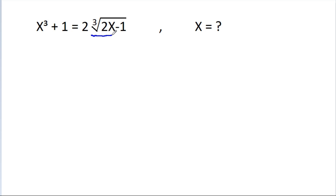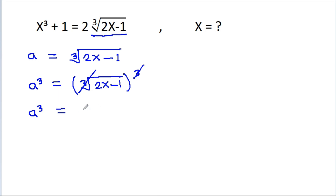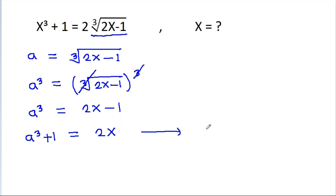Suppose a is equal to the cube root of 2x minus 1. Then a cubed will be equal to the cube root of 2x minus 1, cubed. The cube and cube root will get cancelled, so a cubed is equal to 2x minus 1. And a cubed plus 1 will be equal to 2x. Suppose this is equation 1.